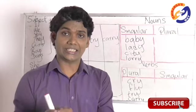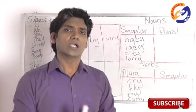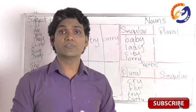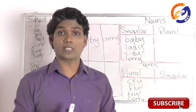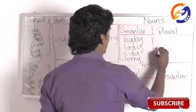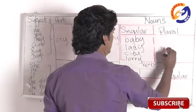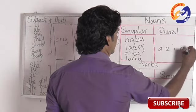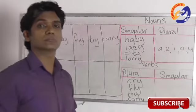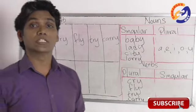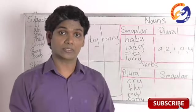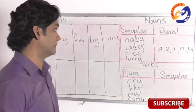What is a consonant? It's easy to understand: a consonant is a letter which is not a vowel. What are the vowels? Vowels are a, e, i, o, u. The letters except these five letters are not vowels.